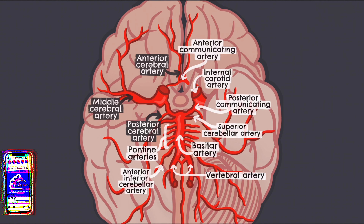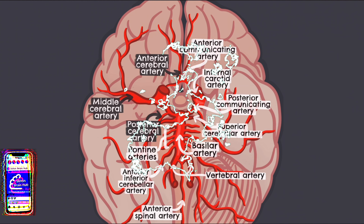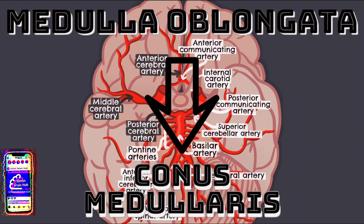Our penultimate artery to mention is the anterior spinal artery, which can be seen here arising as two small branches near the termination of the vertebral arteries. The anterior spinal artery travels in the anterior sulcus of the spinal cord from the level of the medulla oblongata to the conus medullaris, supplying the anterior portion of the spinal cord with blood.